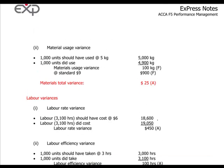We can also calculate the materials usage variance, which depends on the standard cost. In this situation, you compare the units: 1,000 units should have used 5 kilos each, that's 5,000 kilos. But for the 1,000 units produced, you used 4,900 kilos. So there is a favourable variance of 100 kilos measured at the standard price of $9, giving a $900 favourable variance.